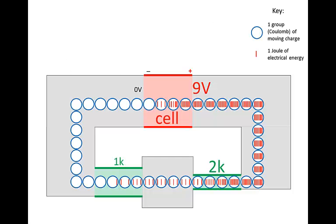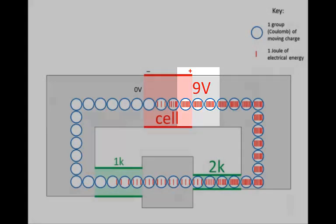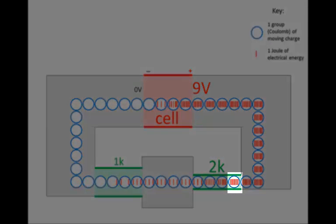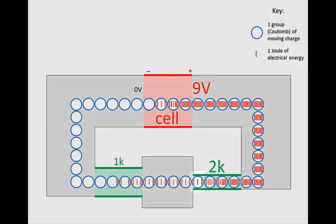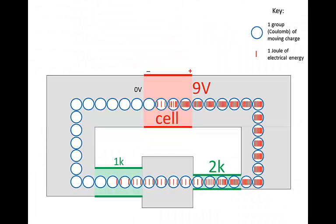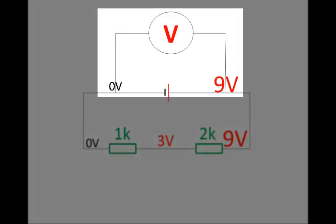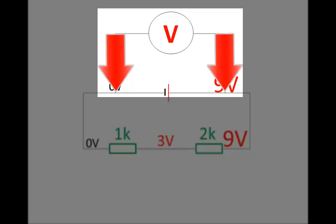Up to now, we've been speaking about the voltage at a point. The voltage at the positive terminal is 9 volts; at the start of the 2K resistor is 9 volts, at the end is 3 volts; at the start of the 1K resistor is 3 volts, and at the end is 0 volts. But actually you cannot get an instrument that measures the voltage at a single point. A voltmeter always measures the voltage between two points — that's why we place it in parallel. It has two probes; one touches one point, the other touches another, and the voltmeter gives us the difference between the two.